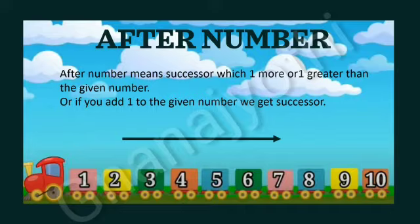For example, the number after 1 is 2. After 2 is 3. After 3 is 4. Likewise, the number after 8 is 9. After 9 is 10. This will be in the forward direction.